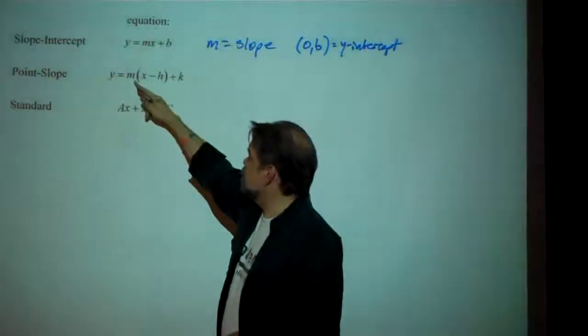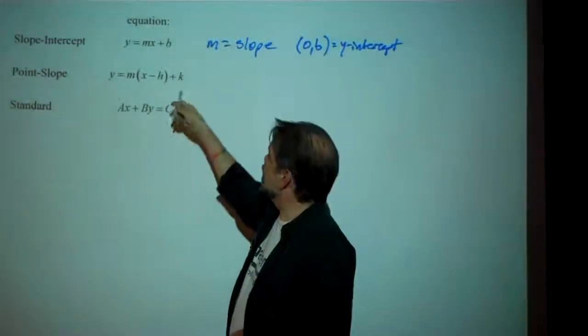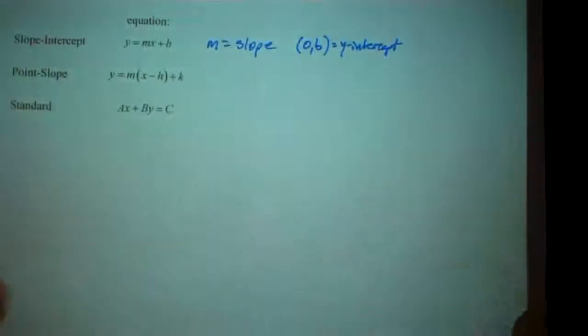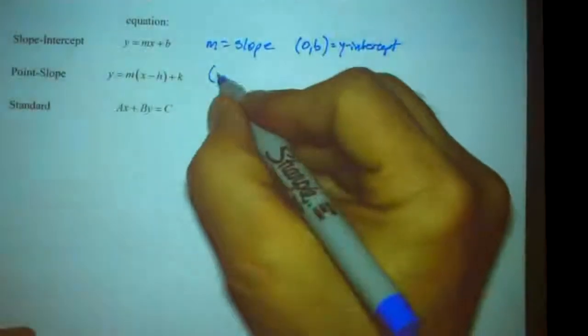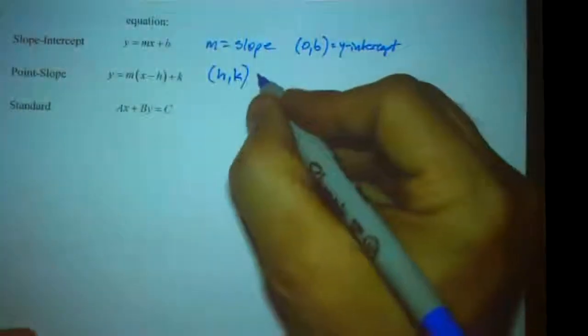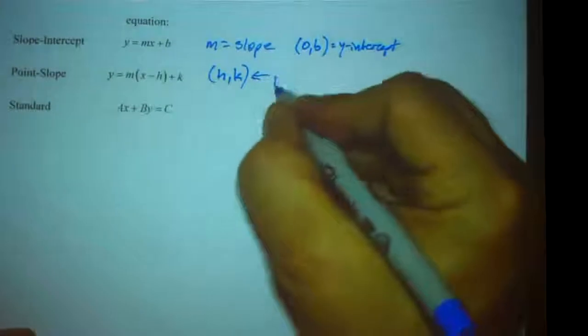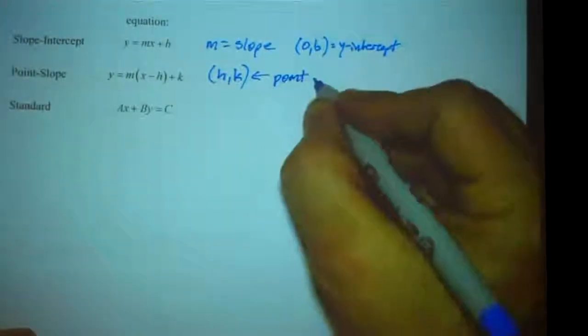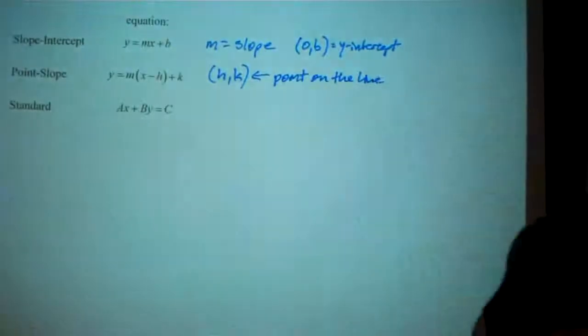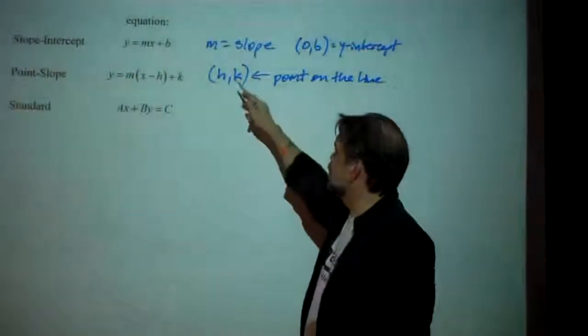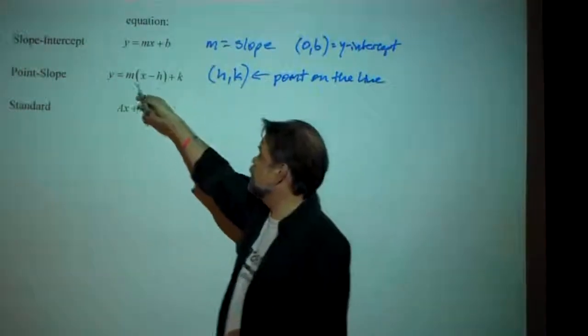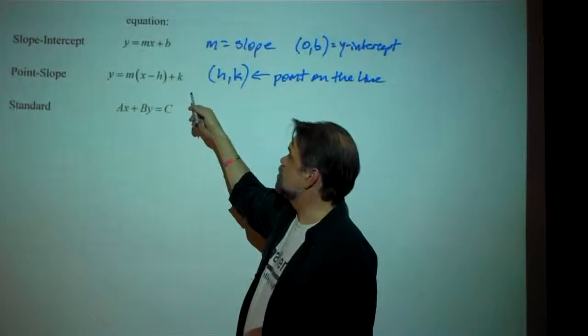And then over here, we still have m. That's still our slope. But now we have the letters h and k in there. And what h and k stand for are the x and y-coordinates, respectively, of any point on the line. It has the x-coordinate h and the y-coordinate k.